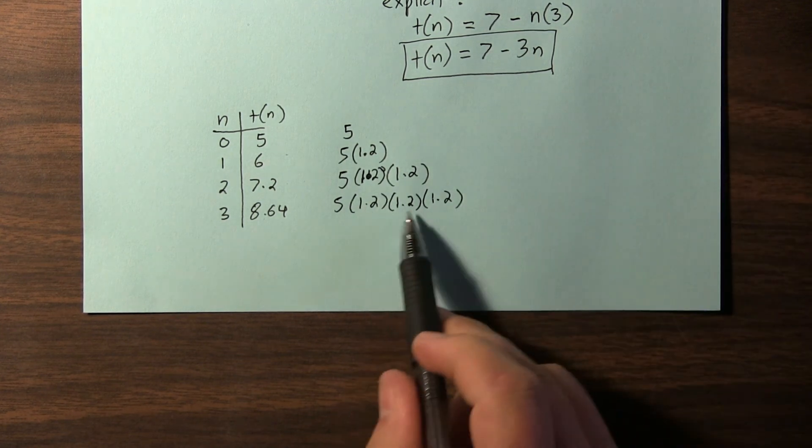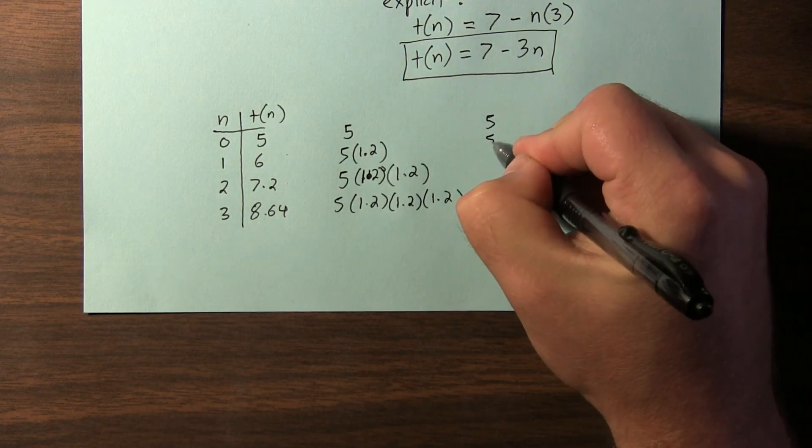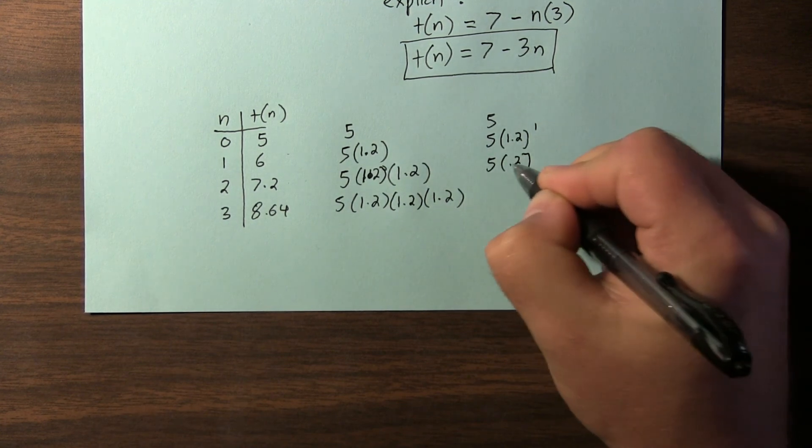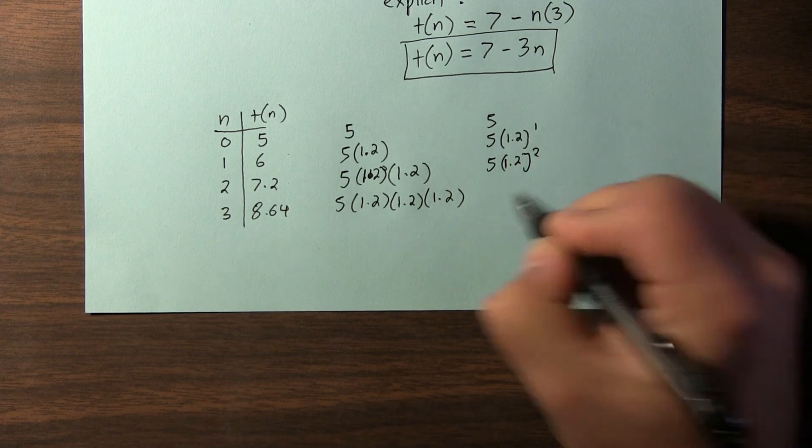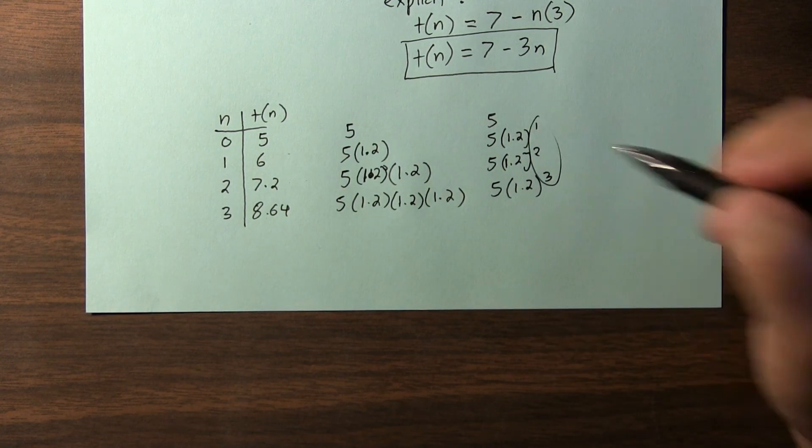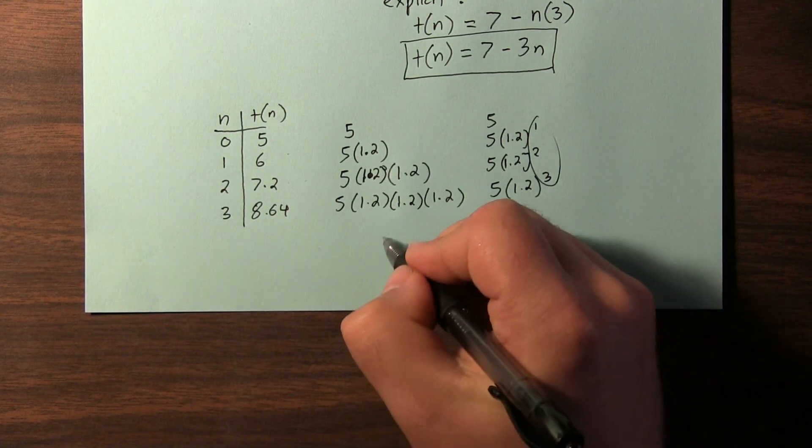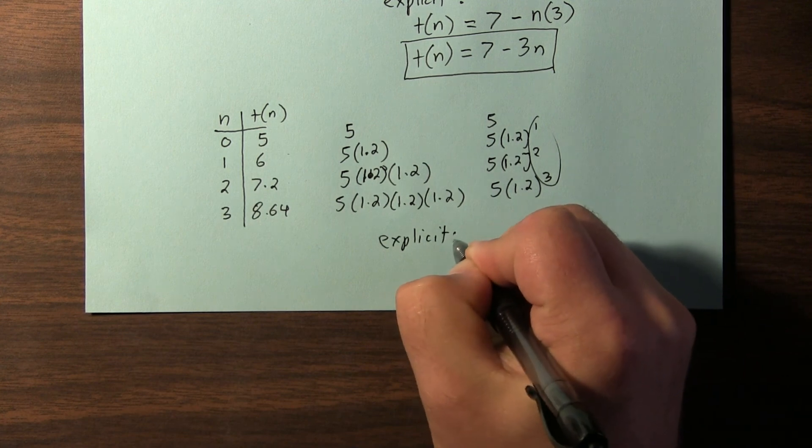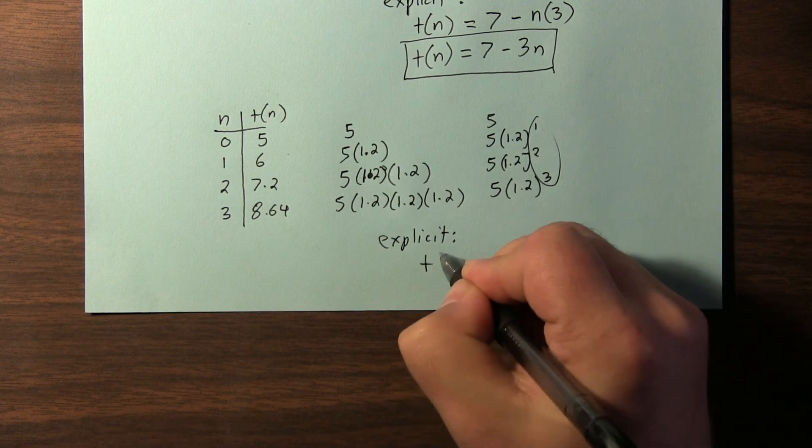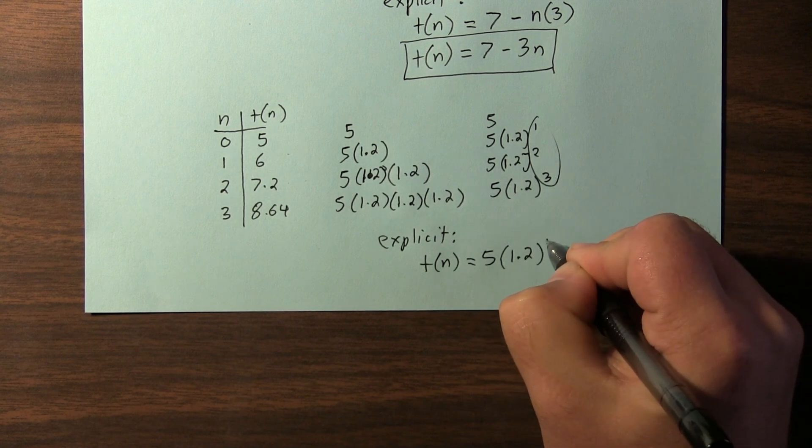Now if we simplify this, repeated multiplication can be expressed with an exponent. So 5, this would be 5 times 1.2 to the first power. This would be 5 times 1.2 to the second power. And this would be 5 times 1.2 to the third power. Notice these exponents correspond with the term numbers. That gives us insight on how to write the explicit equation. So the explicit equation for this one is a term is equal to 5 times 1.2 to the n.